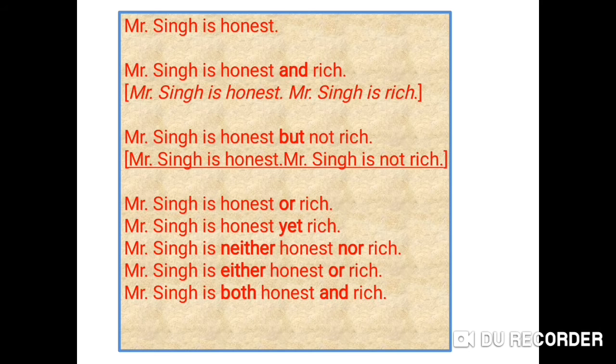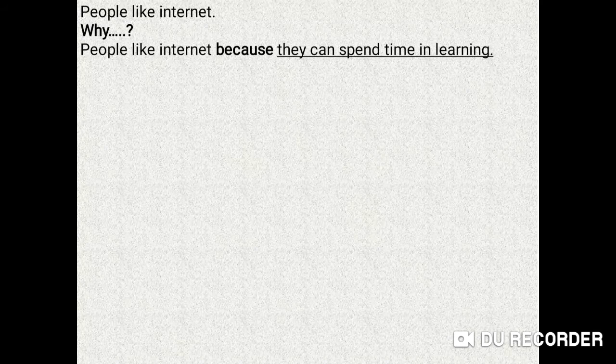This type of sentence in English is known as a compound sentence. Now let's look at complex sentences. So let's learn how to frame them in an easy and understandable way. Have a look at the following sentence first: 'People like internet.' This is a simple sentence, but if we add a question word at the end of the sentence — as 'why' — means 'Why do people like internet?' — we get the answer: 'Because they can spend time in learning.' So the complex sentence is made.